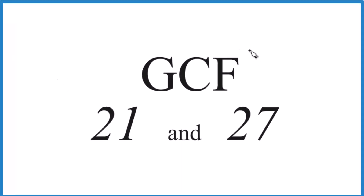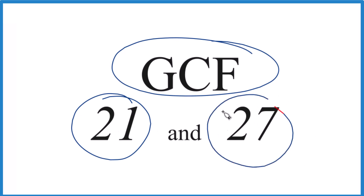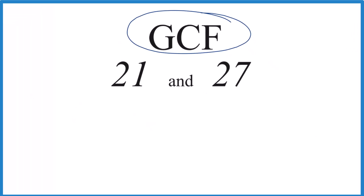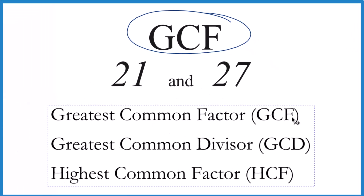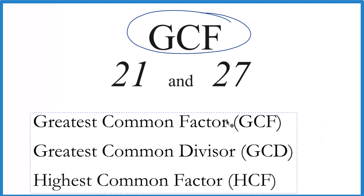If you need to find the greatest common factor for 21 and 27, here's how you do it. The greatest common factor — sometimes that's called the greatest common divisor or the highest common factor. I like greatest common factor.